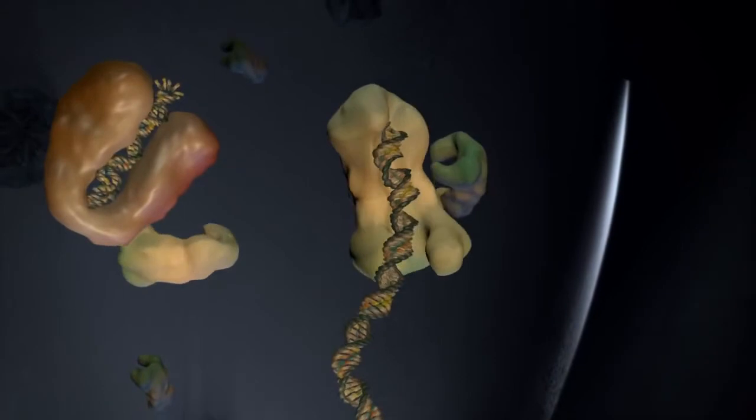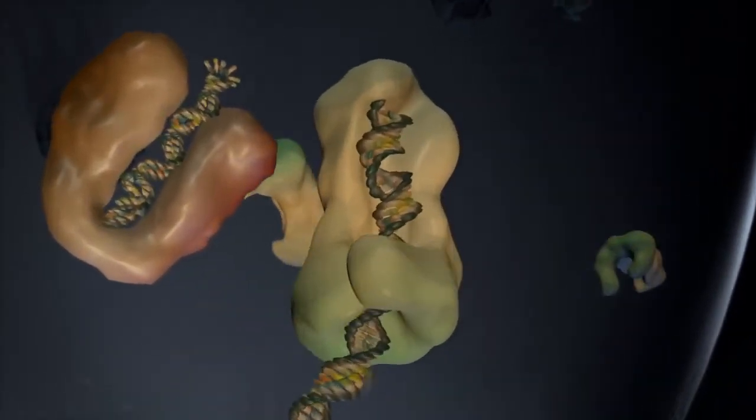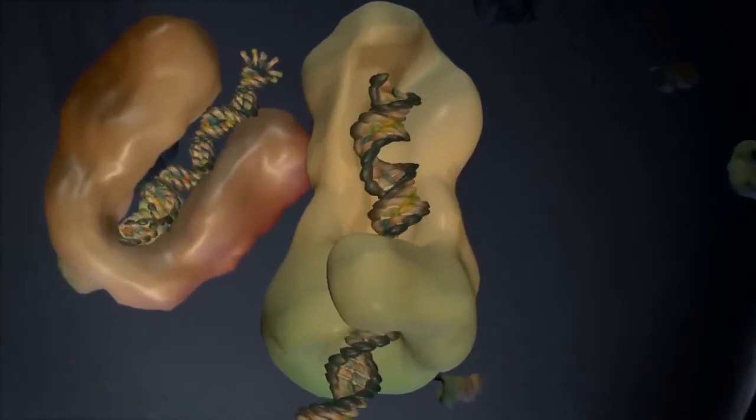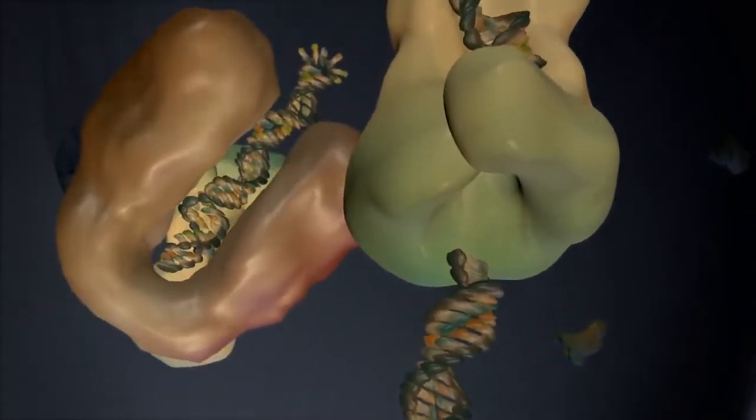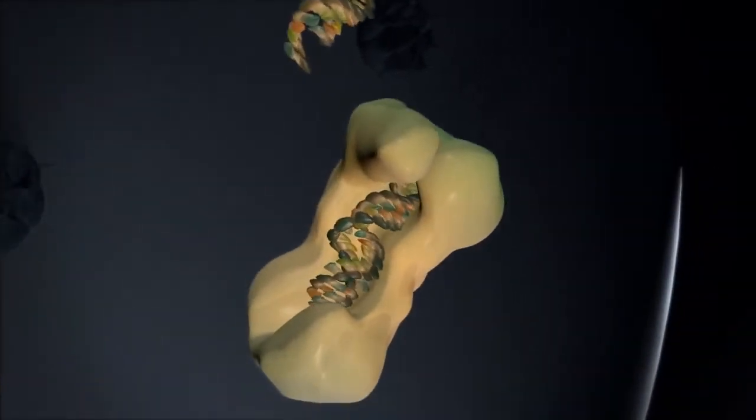The double-stranded precursors of microRNAs and siRNAs bind to DISA, which is an endonuclease protein that cuts the RNA into short segments. Most siRNAs and microRNAs are approximately 21 nucleotides long.